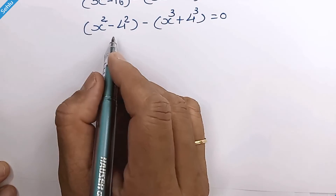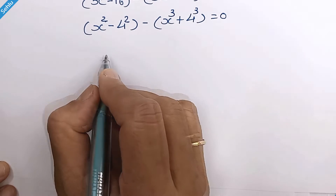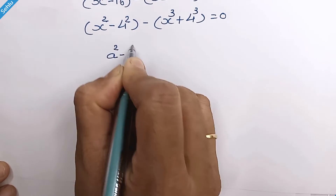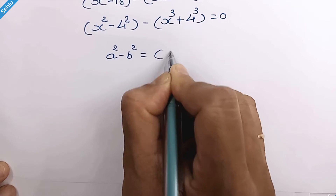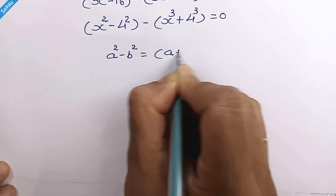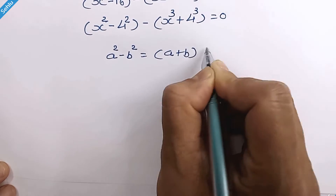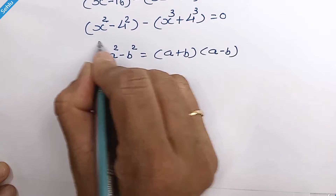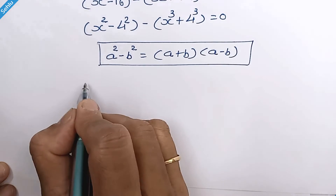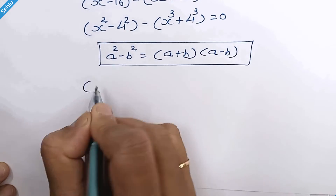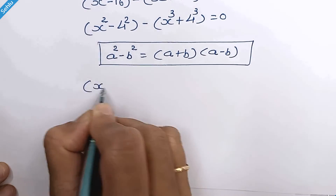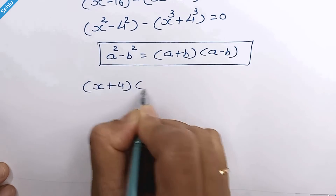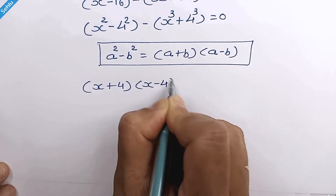Can you see an identity here? Which is a squared minus b squared is equal to a plus b times a minus b. So we can write this part as x plus 4 times x minus 4.